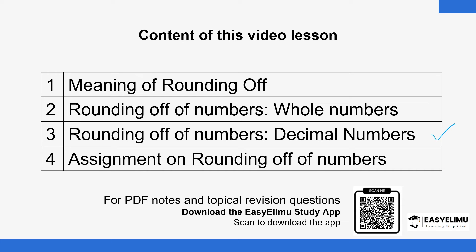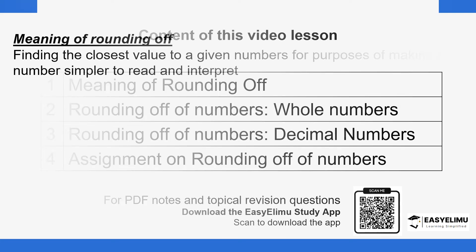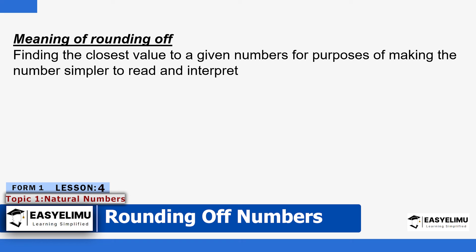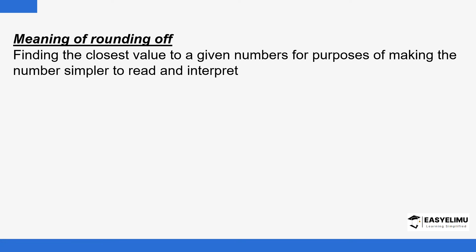When we talk about rounding off, it simply means trying to find the closest value to a given number, basically for purposes of making the number simpler to read and to interpret. If you see a number just at a glance, you should be able to tell what the approximate value of that given number is.